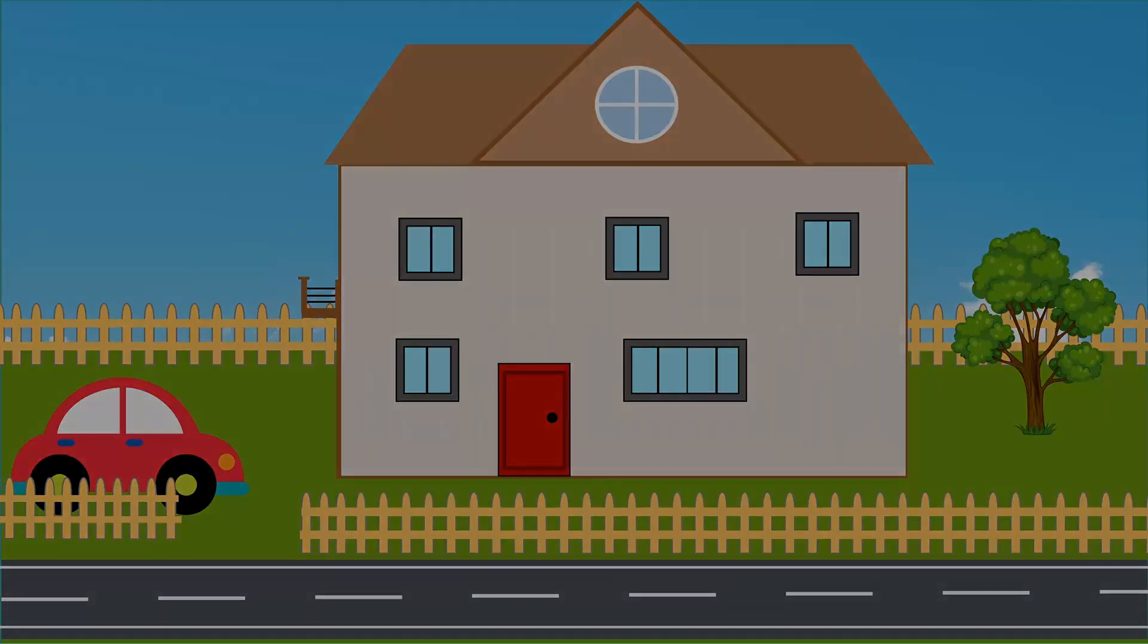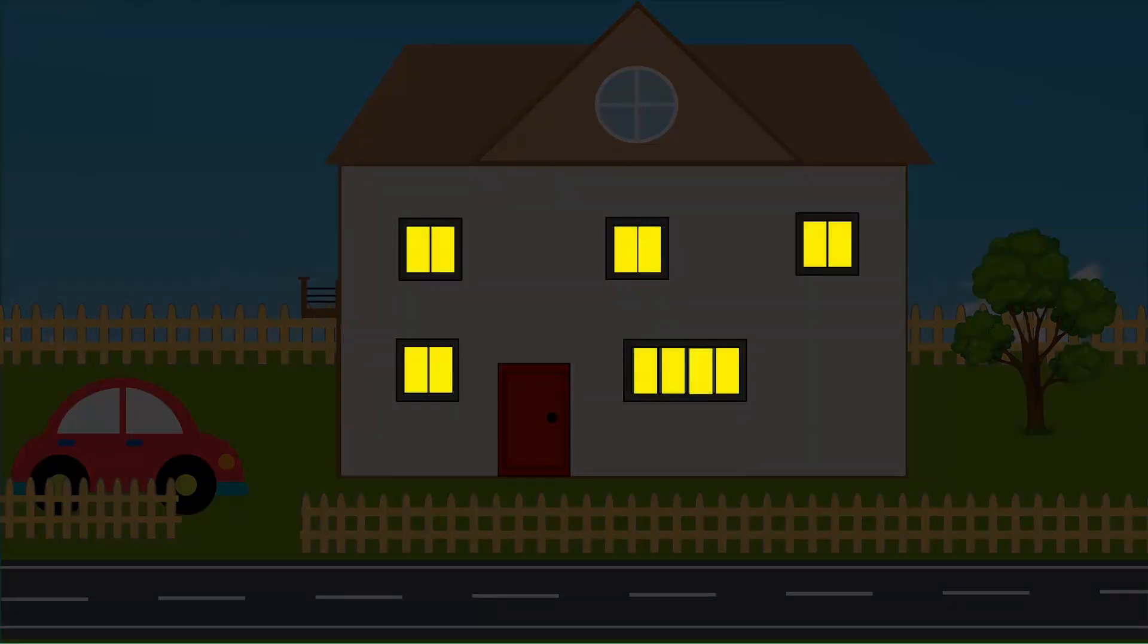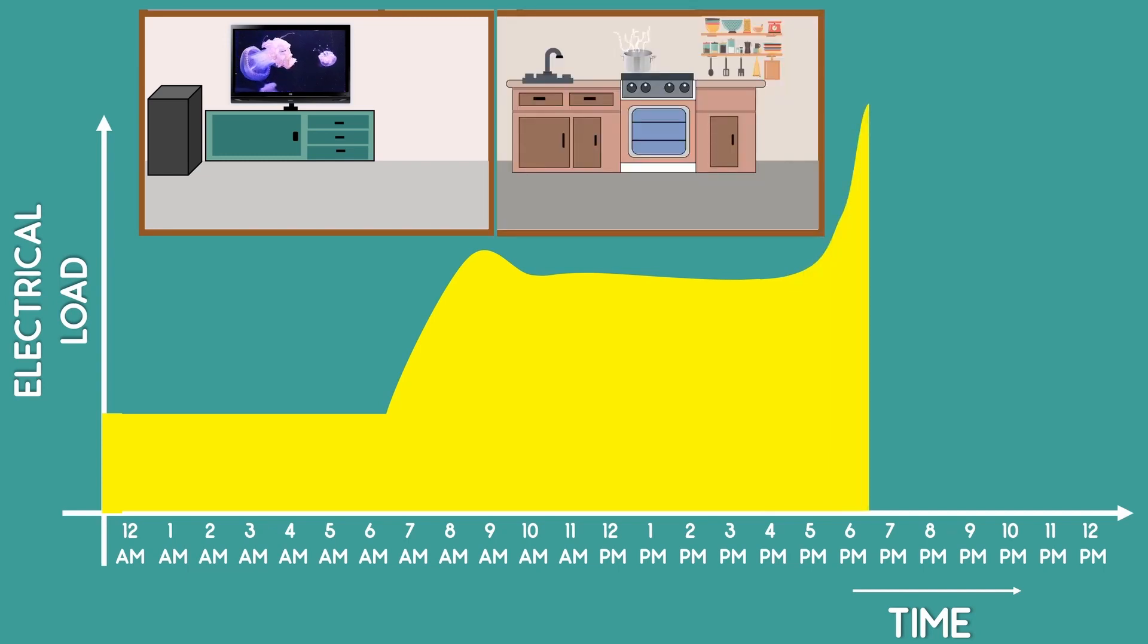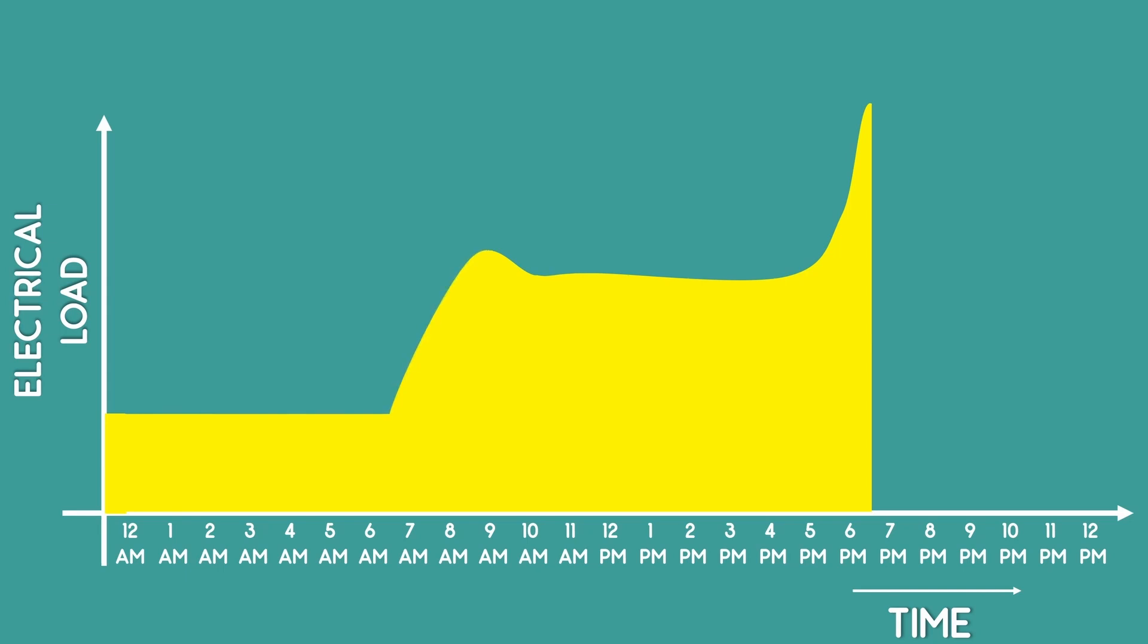Later in the evening, when the sun goes down, lights, street lights and televisions are switched on which increases the electricity demand. Dinner preparations add to the demand. Around 10 p.m. the electricity demand decreases as people go to bed.